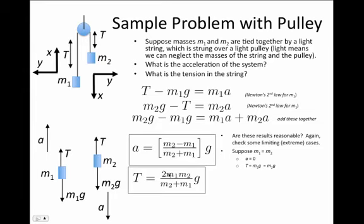And when m2 is equal to m1, I notice that the value for T is just m1g or m2g, whichever you like, because they have the same value. And that makes a lot of sense.